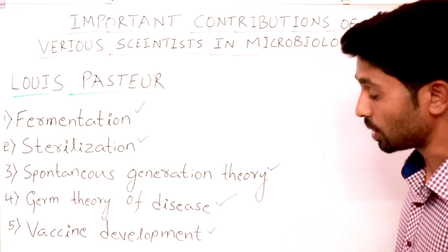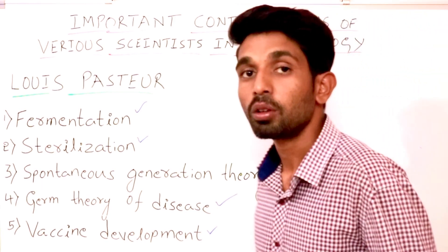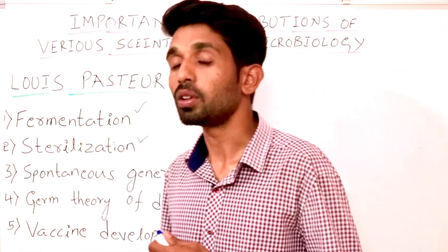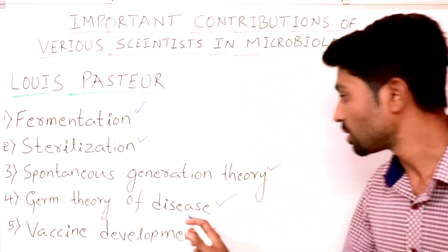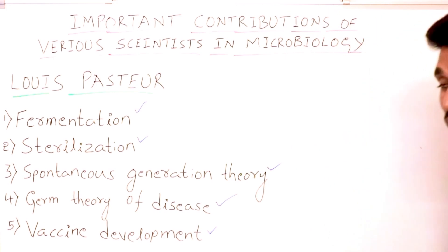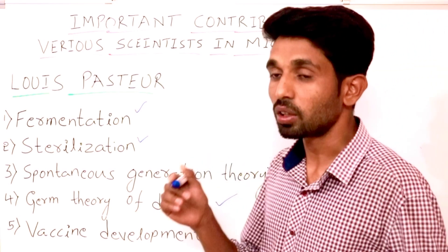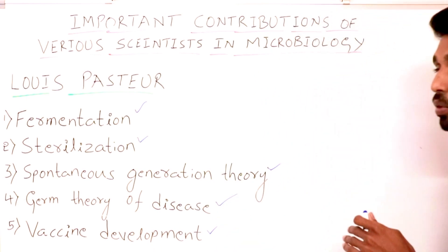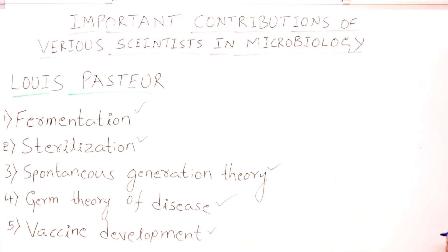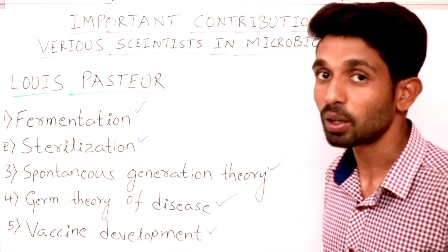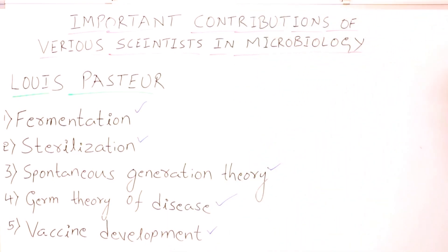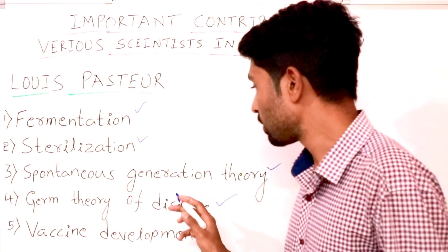For example, if we have a fever, we go to the hospital and take medicine from the doctor. That medicine stops the growth and reproduction of the particular harmful bacteria. As a result, we feel better and are completely cured. That is all about the germ theory of disease.